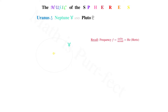We next consider the orbit of Neptune, which lasts 60,189 days. When translated into seconds via the hour, minute, and second conversion factors, then reducing the units of days, hours, and minutes, we are left with one cycle every 5,200,329,600 seconds, or 1.922955 times 10 to the minus tenth hertz.